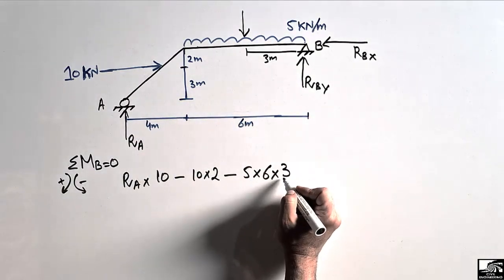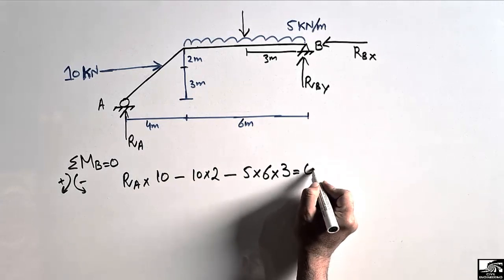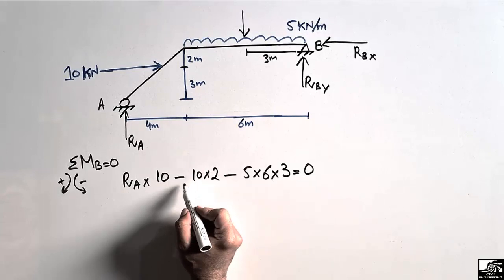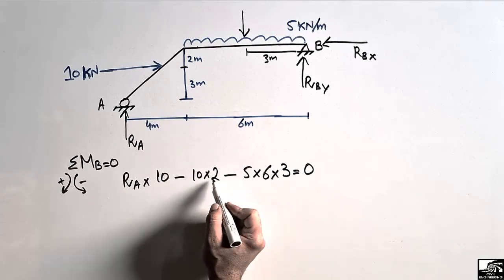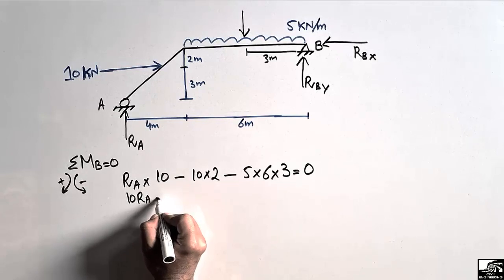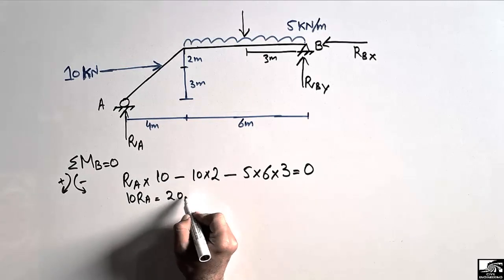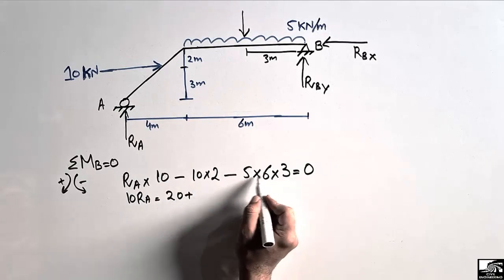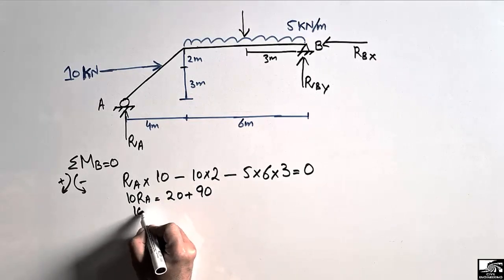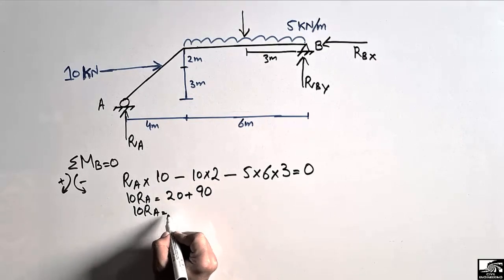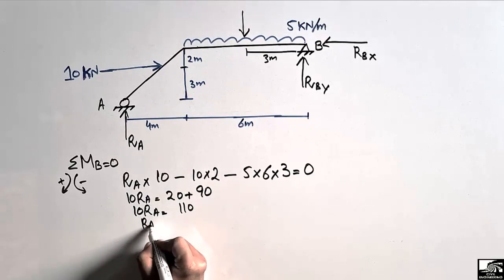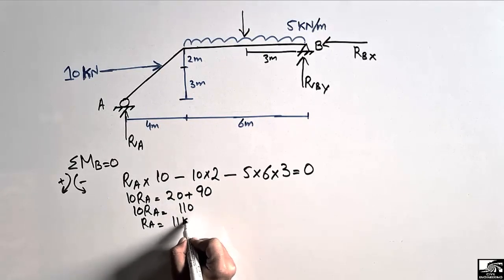The summation of all moments about point B equals zero. Shifting terms to the right side: 10 RA equals 20 plus 90, so 10 RA equals 110, and RA comes out to be 11 kilonewton.